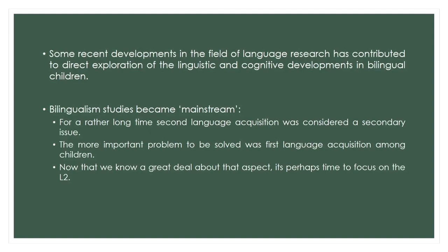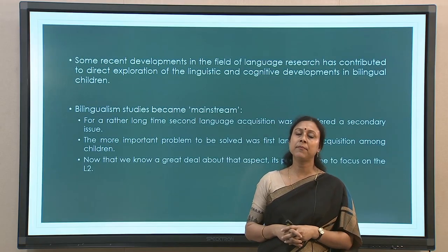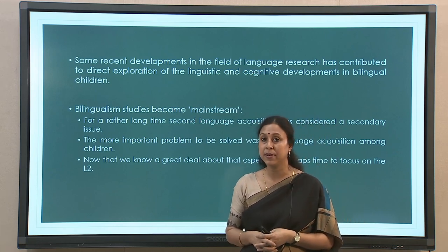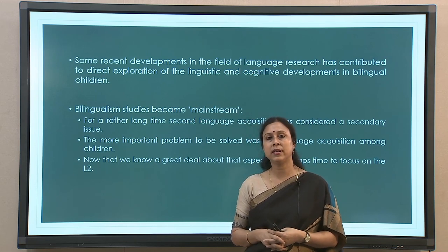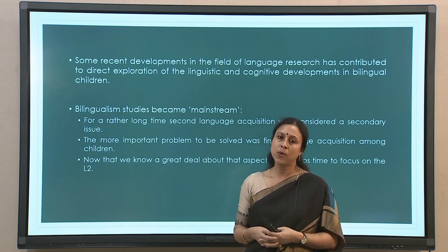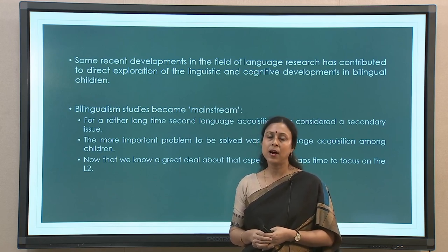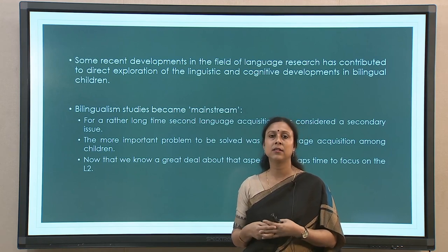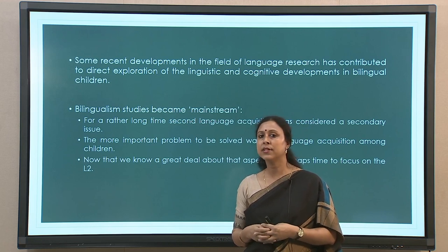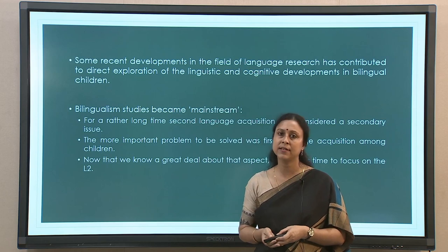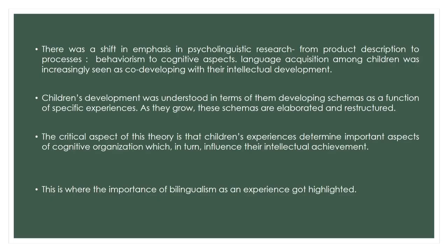This marked a very important departure from the earlier standpoint. Simultaneously, many other things were also happening. Bilingualism became a mainstream idea — meaning that monolingualism, and how children acquire their first language, had dominated language research for a long time. After a few decades of research and data on monolingualism, the field was ready for a shift toward bilingualism. That was a natural progression from within the field: once you know enough about monolingualism, you can take up bilingualism as a new area to explore.